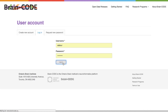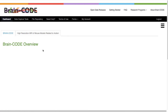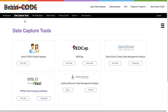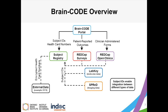All data capture tools for which you have been granted access can be accessed through the BrainCode Portal. Here is the overview of the BrainCode Platform. OpenClinica and RedCap are two clinical electronic data management systems on BrainCode. Both are utilized for the collection of clinician-administered data. RedCap is additionally used for the collection of patient-reported outcomes. Imaging data, which includes MRIs, EEGs, MEGs, and other modalities, are managed using the SPREAD-XNAT system.